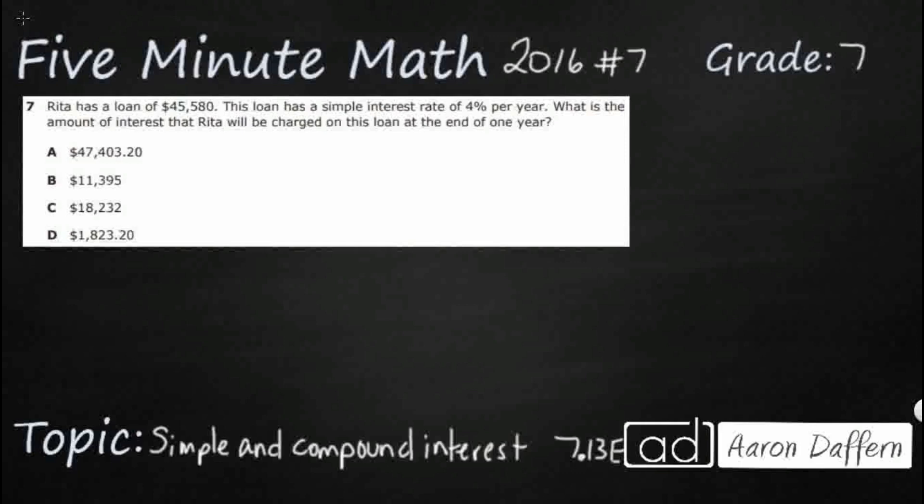So Rita has a loan of $45,580. The loan has simple interest, and that's going to be a lot easier to calculate than compound interest, and its rate is 4% per year. We're looking for the amount of interest that she will be charged at the end of one year.